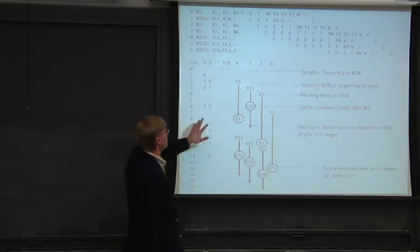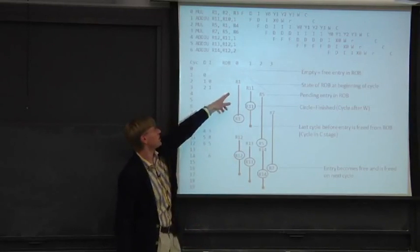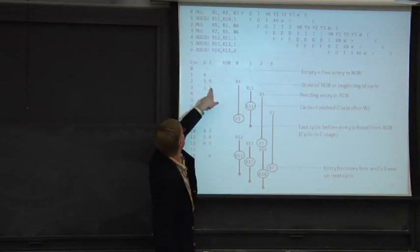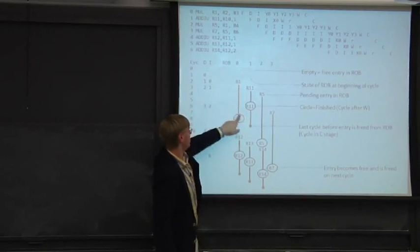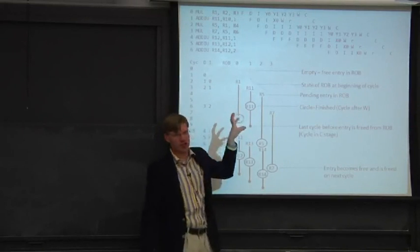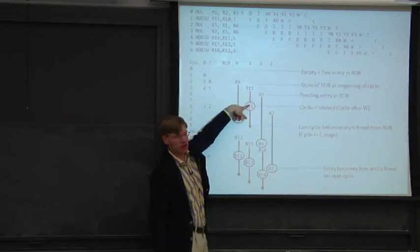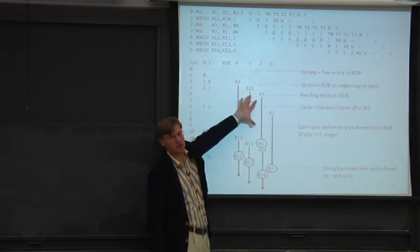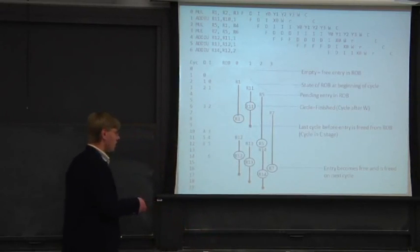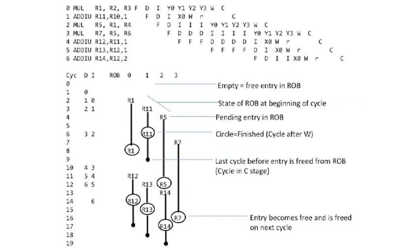Here's an example showing different ROB entries and when they get allocated. A multiply in instruction 0 allocates a ROB entry for R1 — it's long latency and finishes late. An add to register 11 allocates, finishes early, but must wait in the ROB until it can commit in order, occupying ROB space. Other adds finish relatively quickly but must wait for older long-latency instructions to commit before they can commit themselves.